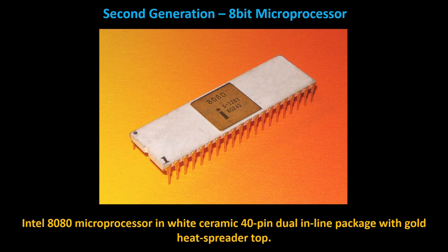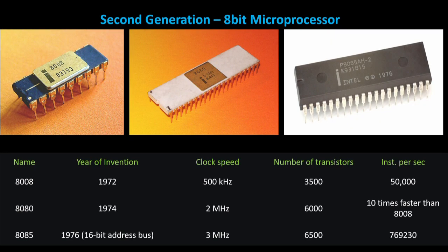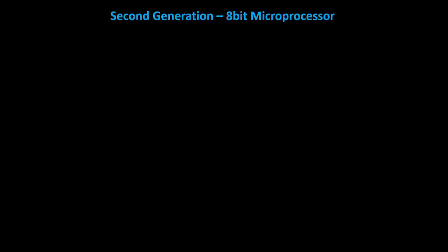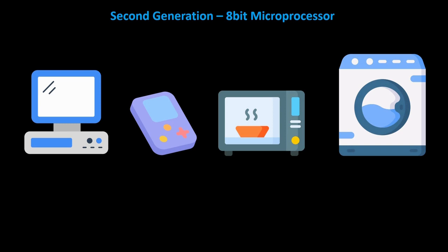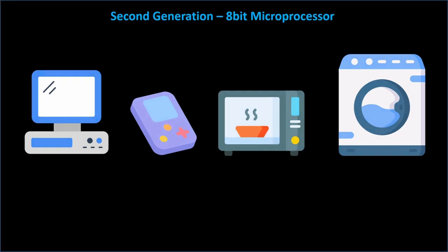The second generation of microprocessors, introduced in the late 1970s, were 8-bit microprocessors, and played a pivotal role in the development of personal computers. The most popular 8-bit microprocessor of this generation was the Intel 8080, which was released in 1974. It had a clock speed of 2 MHz and could perform around 640,000 operations per second. These microprocessors had larger memory and could support more complex instructions, with applications including personal computers, gaming consoles, and electronic appliances such as microwave ovens and washing machines.